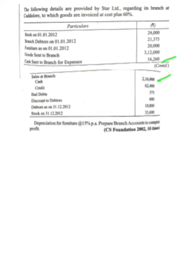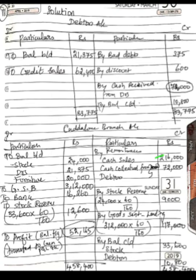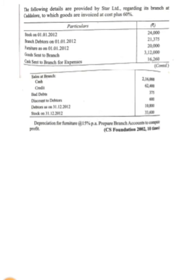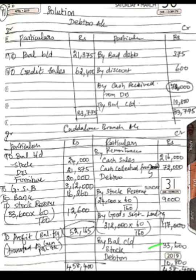Sales at branch: cash sales 2,16,000 — record on the credit side. Cash received from debtors, which we calculated from the debtors account: 72,000 — record that as well. That is why we prepared the debtors account. Closing debtors: 10,800 and closing stock: 33,600 — record both on the credit side.